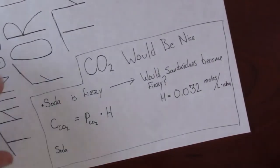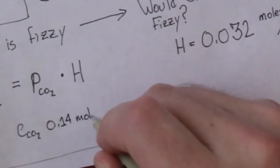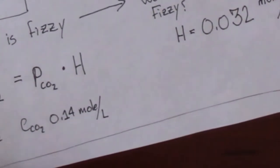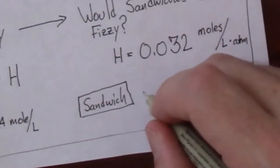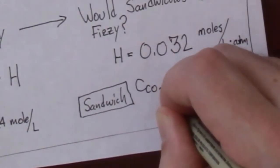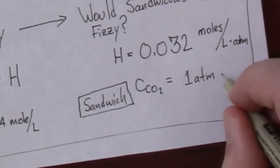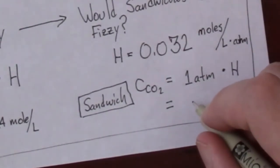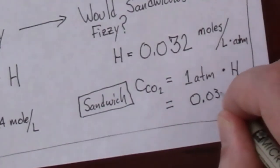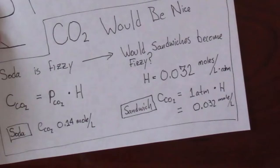For comparison, if we look at a soda, the concentration of CO2 in your soda is about 0.14 molar - so 0.14 moles per liter. For a sandwich, that is for all the water in the sandwich, so if you have a super dry sandwich you don't have to worry about this, but who wants that? The concentration of CO2 would be one atmosphere, that's the partial pressure, presumably, times Henry's constant for CO2, and that comes out to be 0.032 molar.